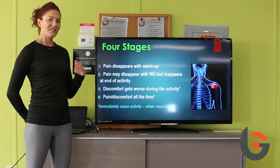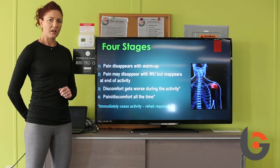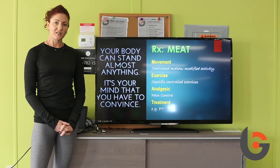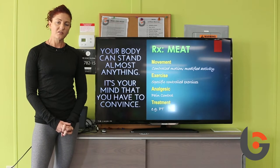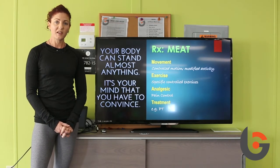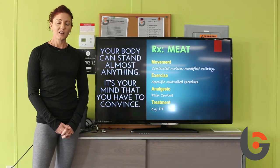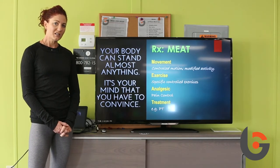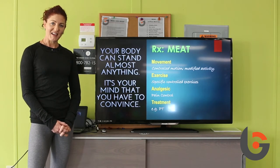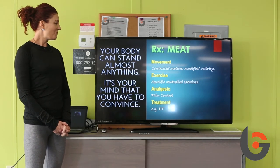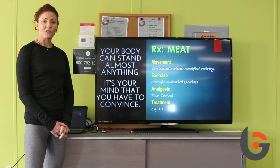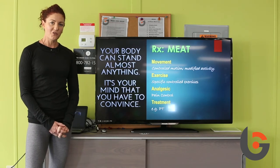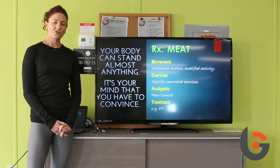Clearly, it's important that we try to recognize these symptoms early so we don't disrupt the training schedule as much as if the pain becomes more chronic. There are a number of risk factors and causative factors involved in overuse injuries, and it is important to determine these when looking at intervention and treatment. For treatment of an overuse injury, MEAT is basically what we're looking at — that stands for Movement, Exercise, pain control or Analgesic, and Treatment.